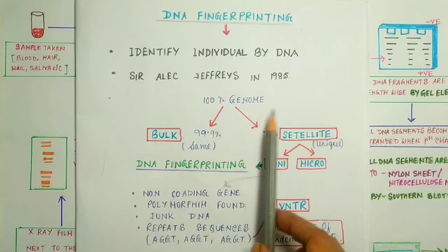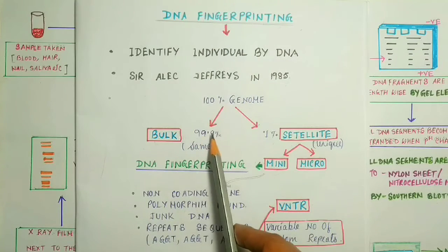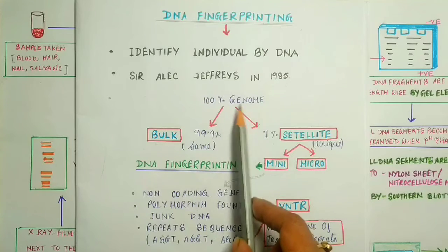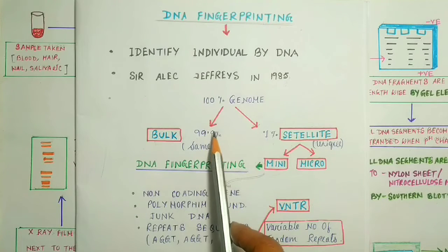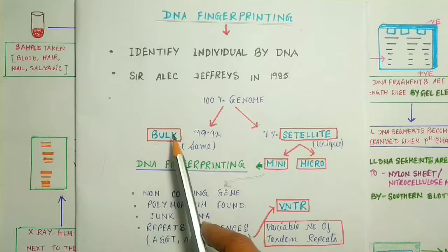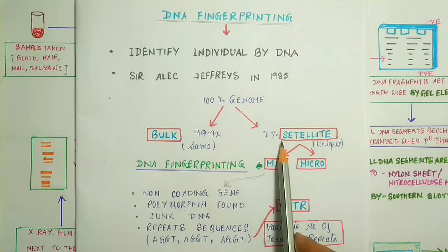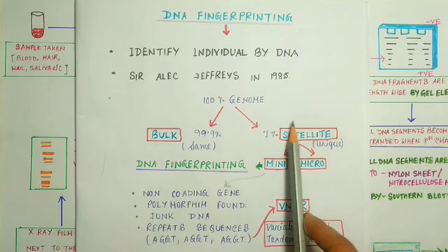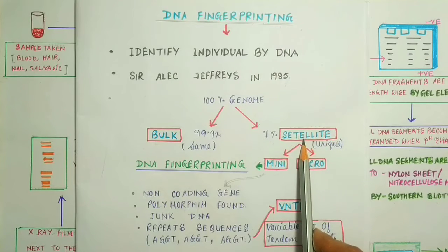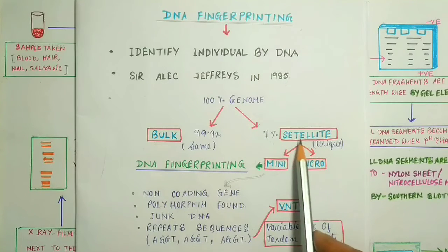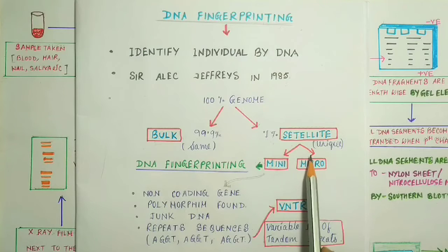In all humans, almost 99.9% of the genome or DNA is similar, and this DNA is called Bulk DNA. Only 0.1% DNA is unique, which is known as satellite DNA. Depending upon the structure, this satellite DNA is divided into two parts.